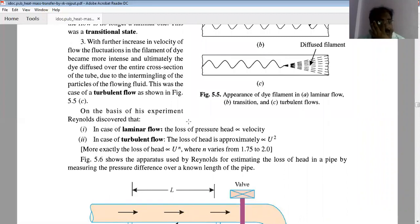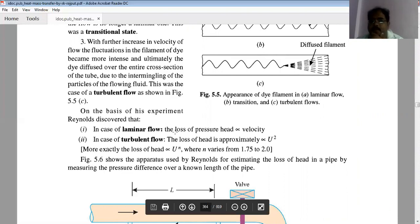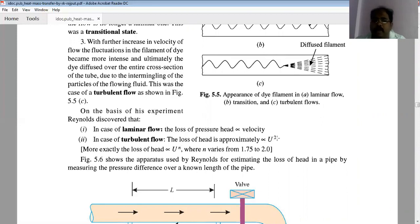From the experiment, we concluded that in case of laminar flow, the loss of pressure head is proportional to velocity. In case of turbulent flow, the loss of head is proportional to velocity squared. Sometimes the loss of head is proportional to u raised to power n, where n varies from 1.75 to 2.0.